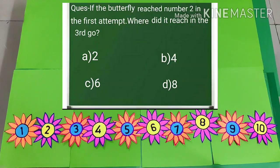Students, as you all are preparing for your past tests, these kind of questions are going to be part of your past test. Like, if the butterfly reached number 2 in the first attempt, where did it reach in the third go? A: 2, B: 4, C: 6, D: 8.